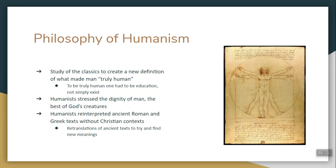Another big part of the Renaissance is humanism — the study of what makes man truly human. There's a guy named Erasmus who says men are made, not born. It's no longer enough just to live to be human — to be truly human, you have to become educated. Humanists still believe that angels, God, and heaven are real, but they say man is the best of God's creations, and we must be educated to get as close to God as possible. Humanists go back and look at ancient Roman and Greek texts, retranslating old writings to find new meanings in them.